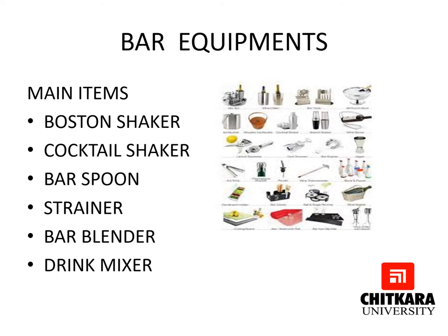Looking at a few bar equipment items used on a daily basis: we have the Boston shaker, cocktail shaker, bar spoon, strainer, blender, drink mixer, peg measures, ice buckets, wine holder, lemon squeezer, and straws. There are a number of equipment items used in the bar daily that support overall operations. The bar must be well stocked and well maintained, and all equipment must be properly cleaned and taken care of.